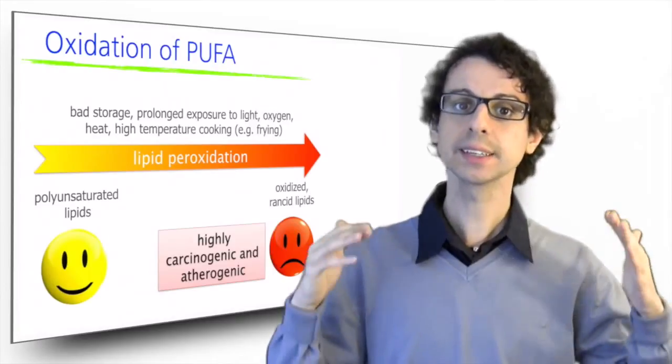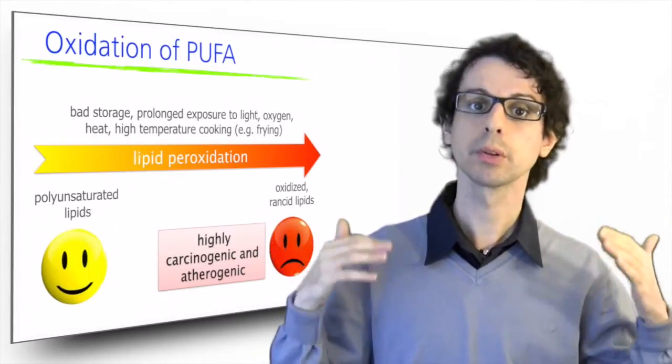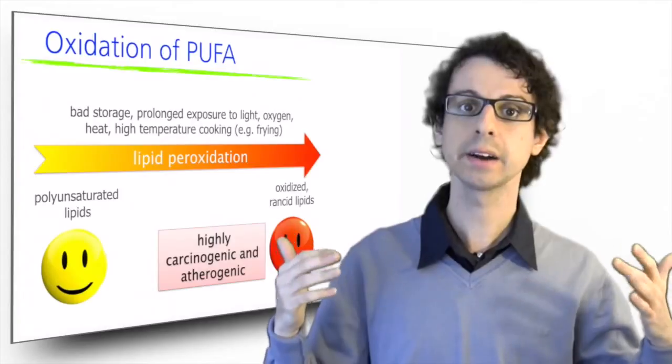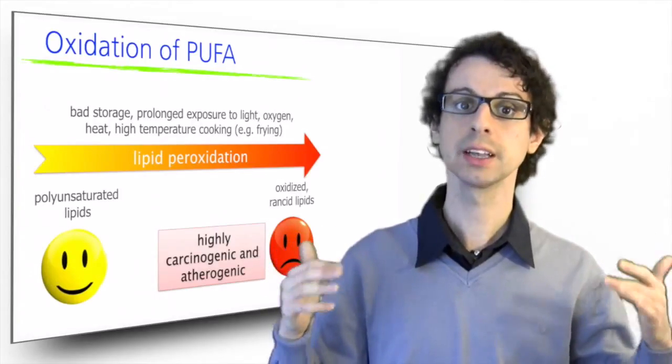In food, fats get oxidized with bad or prolonged storage, prolonged exposure to light, air, heat, and high temperature cooking, such as deep frying.